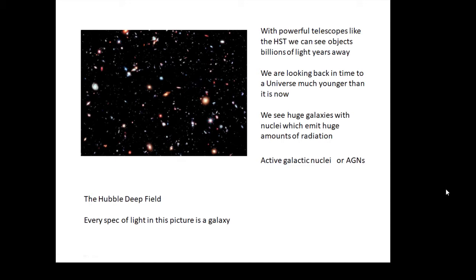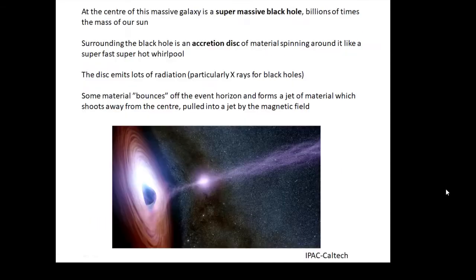At the center of a massive galaxy there is a supermassive black hole. Some of them are billions of times the mass of our Sun. Surrounding the black hole is an accretion disk - a disk of material whizzing around very fast, a super fast hot whirlpool.